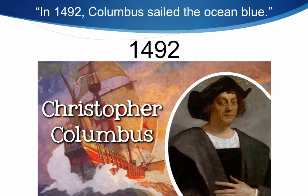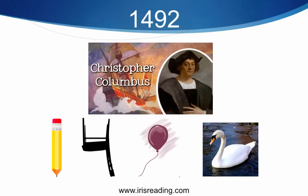You take 1492 and the one is a pencil, the four becomes a chair, the nine becomes a balloon, and the two is a swan. We need these visuals to interact in some kind of a story related to Christopher Columbus, and they have to interact in that particular order because we're trying to remember 1492.